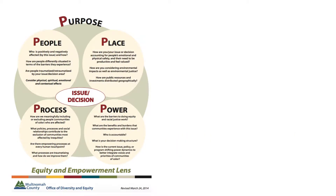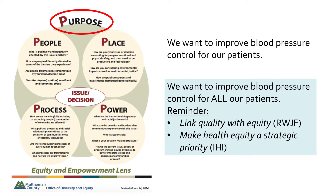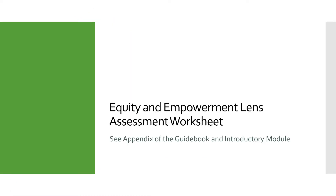Again, there are five Ps to the equity and empowerment lens, and the first is purpose. In our case, we want to improve blood pressure control for our patients — but let's be more explicit and state we want to improve blood pressure control for all our patients, which really is your team's intent. Let's remember the Robert Wood Johnson Foundation telling us to link quality and equity, while the Institute of Healthcare Improvement instructs us to make health equity a strategic priority. You'll find in the appendix of both the guidebook and the introductory module a modified version of the equity and empowerment lens designed specifically to support clinical quality improvement work, called the equity and empowerment lens assessment worksheet.